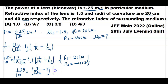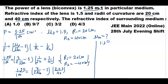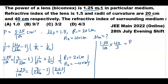We take the LCM of 20 and 40, which is 40. 40 divided by 20 gives 2; multiply by 1 gives 2. 40 divided by 40 gives 1; multiply by 1 gives 1. So 1/20 plus 1/40 becomes (2 plus 1)/40 = 3/40. Therefore 1.25/100 equals (3/2) into (refractive index of medium minus 1) into 3/40. Transferring 3/40 across: 1.25 times 40 divided by 3 equals (3/2) into (refractive index of medium minus 1).